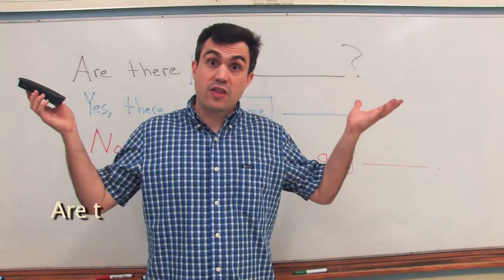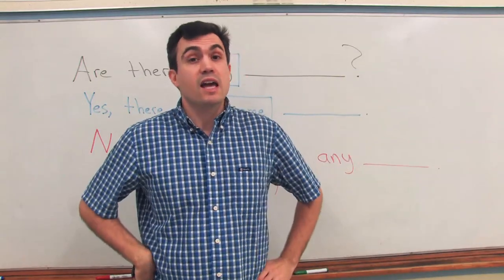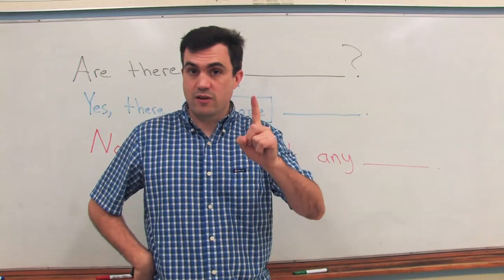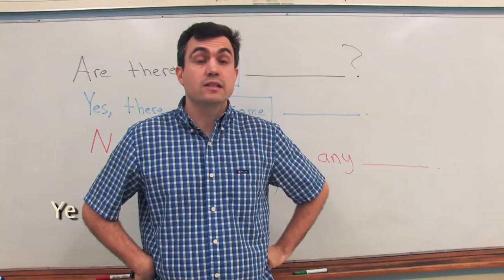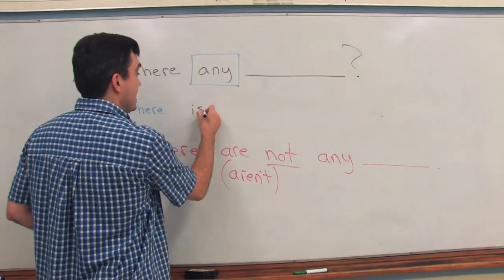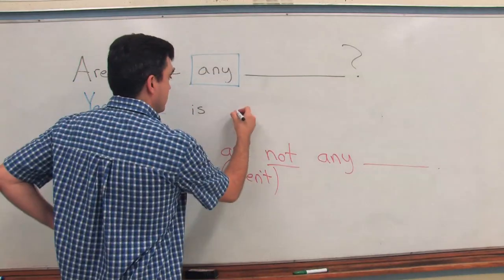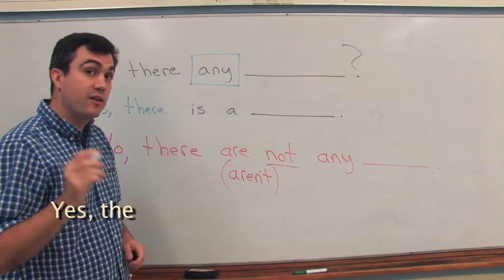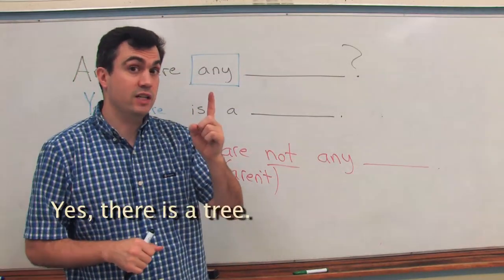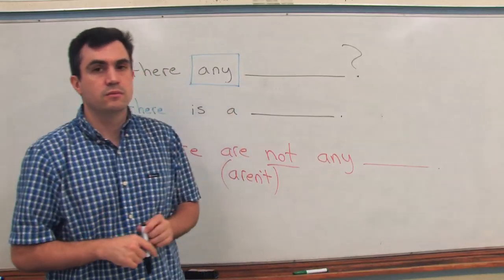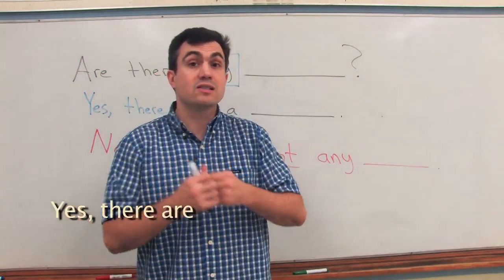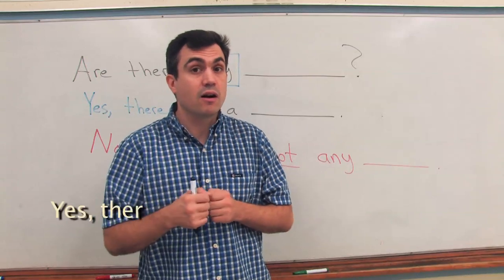If the question is 'are there any?', I might say 'yes, there are' if the answer is plural. But if the answer is singular, I would say 'yes, there is.' 'Are there any trees? Yes, there is a tree' — we know there is one tree. Or, if there are many trees: 'Yes, there are. Yes, there are some trees. Yes, there are many trees.'